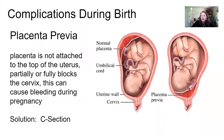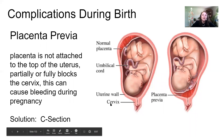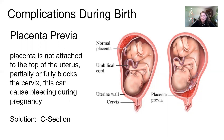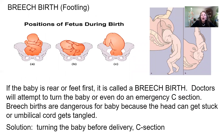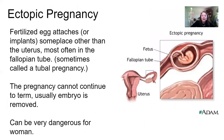Some complications with birth: placenta previa is when the placenta becomes detached early or late in development and blocks the cervix, causing early bleeding in pregnancy. The usual result is a forced C-section. Breech birth is when the baby is positioned butt-down instead of head-down later in pregnancy, requiring either a C-section or maneuvers to flip the baby prior to birth. An ectopic pregnancy — as mentioned earlier — is when a fertilized egg implants in the lining of the fallopian tube instead of the uterus. As the embryo grows, the fallopian tube stretches dangerously since it is not meant to be wider than a piece of spaghetti.